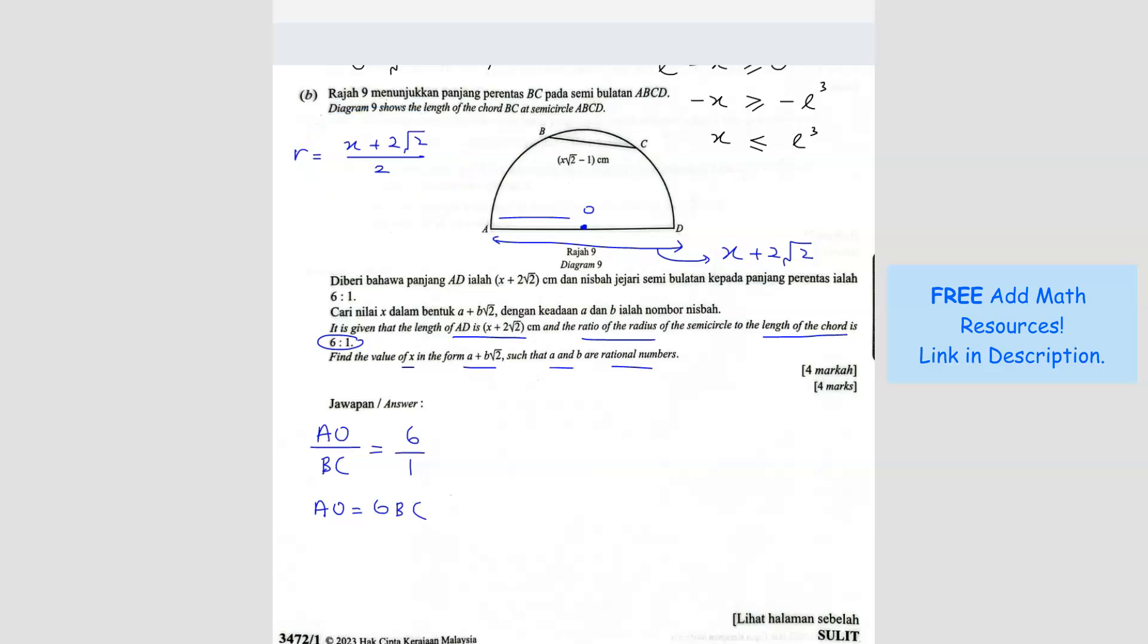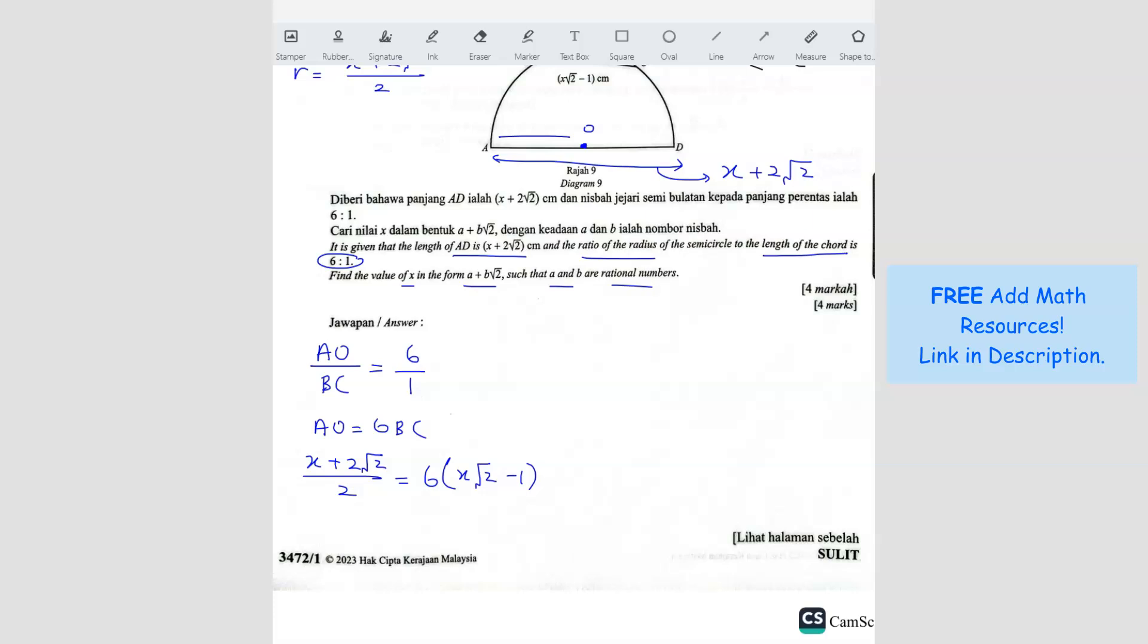So AO is the radius which we already found here. x plus 2 root 3 over 2, over 2, equals to 6 times BC. So BC is also given here. x root 3 over 2 minus 1. So we just have to rearrange this. Then we can solve it. So I'm going to bring the x to the right side and the number to the left side. So 12 plus 2 root 3 over 2 equals to 12 x root 3 over 2 minus x.